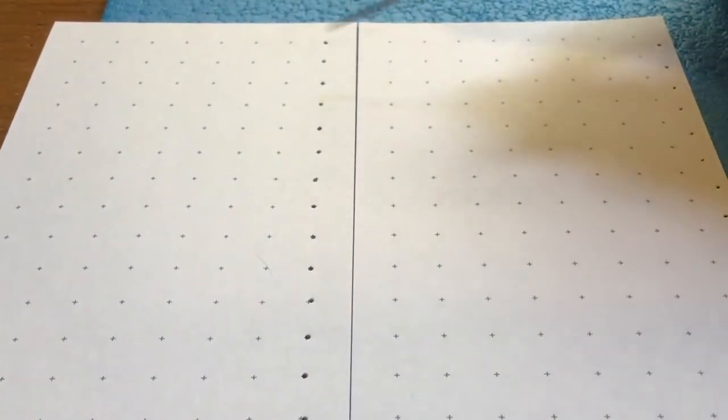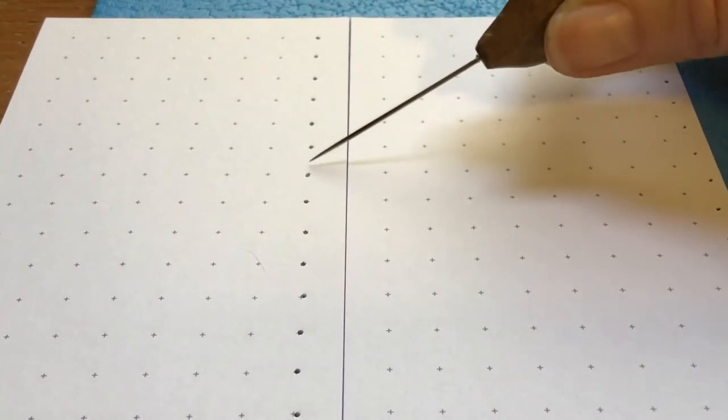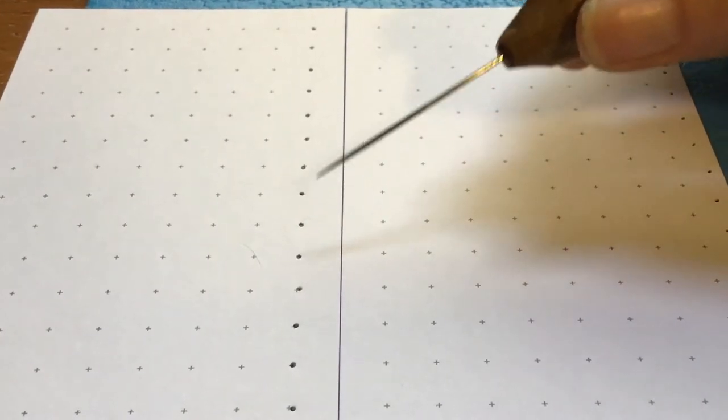The first step is to poke holes. I've used the cards from our kit that have the little markings. In this first set I've poked the holes right on the X's.